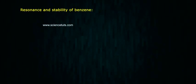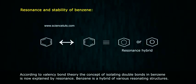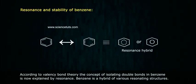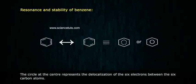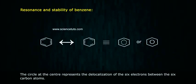According to valence bond theory, the concept of localizing double bonds in benzene is now explained by resonance. Benzene is a hybrid of various resonating structures. The circle at the center represents the delocalization of the six pi electrons between the six carbon atoms.